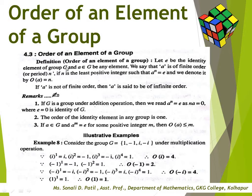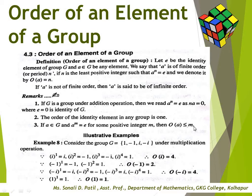Next point: order of an element of a group. Definition: let E be the identity element of group G and A ∈ G. We say A is of finite order n if n is the least positive integer such that Aⁿ = E, and we denote it by o(A) = n. If A is not of finite order, then A is said to be of infinite order. Remarks: in an additive group, Aⁿ = E reads as nA = 0; the identity element has order 1; and if Aᴹ = E then o(A) ≤ M.